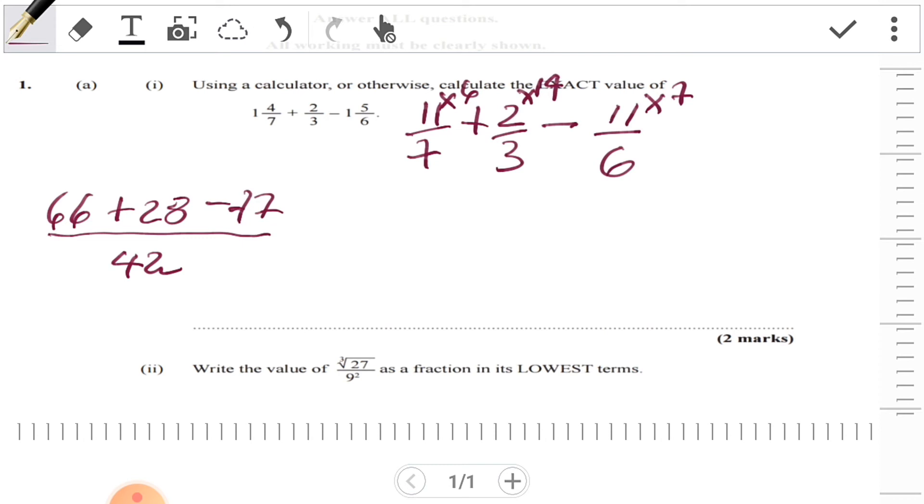What we need to do is add these up together and subtract 77. If we add everything and subtract 77, we get 17/42. As you can see, 17 is a prime number and cannot go into 42, so this is the final answer. We would have collected two marks easily.